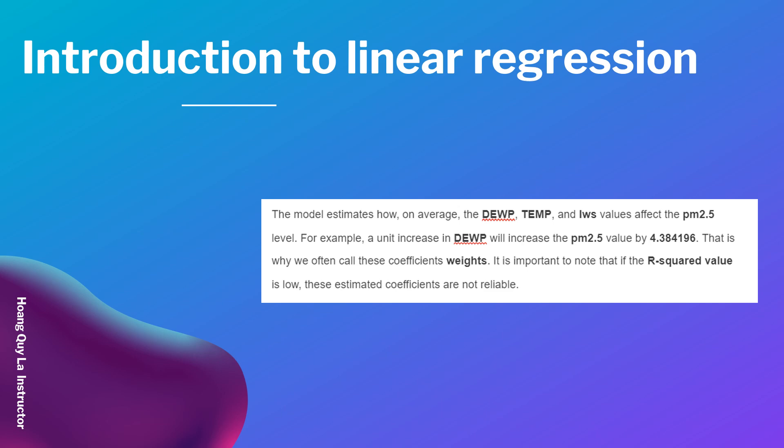For example, a unit increase in DEWP will increase the PM 2.5 value by 4.384196. That is why we often call these coefficient weights. It is important to note that if the R-squared value is low, these estimated coefficients are not reliable.